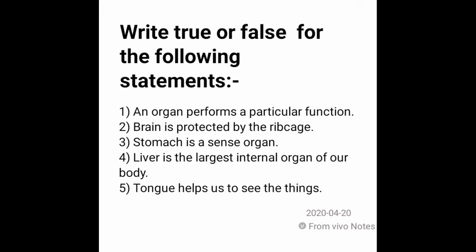Now for the exercises: write true or false for the following statements. First: an organ performs a particular function — True. Second: brain is protected by the rib cage — False, it is protected by the skull. Third: stomach is a sense organ — False. Fourth: liver is the largest internal organ of our body — True. Fifth: tongue helps us to see — False.